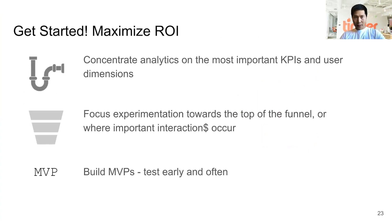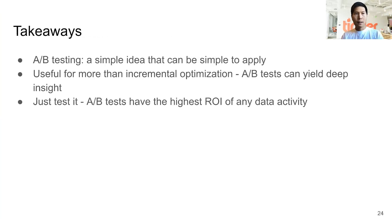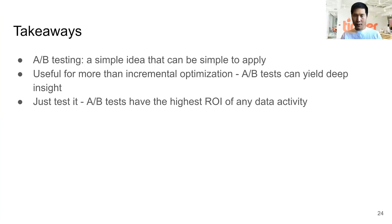If you want to get started, I recommend maximizing your ROI with three key steps: first, concentrate your analytics on the most important KPIs and user dimensions; focus your experiments towards the top of the funnel or where important interactions occur; then build minimum viable products and test early and often. Our takeaways: A/B testing is a simple idea that can be simple to apply, useful for more than incremental optimization, can yield deep insight, and has the highest ROI of any data activity — so just test it.